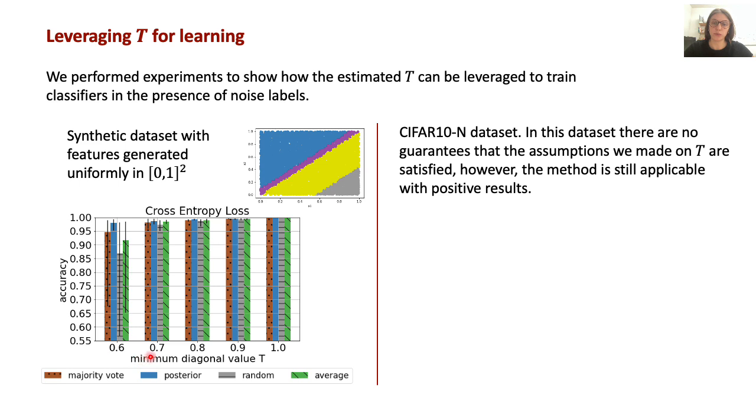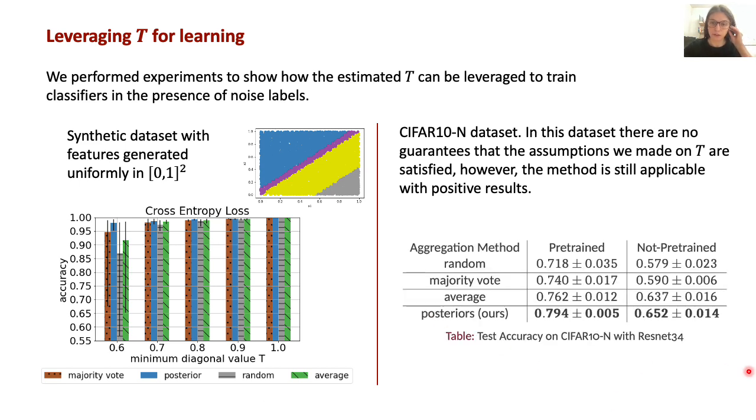Smaller value of the minimum diagonal value refers to a noisier dataset, while the minimum diagonal value is equal to one in the case of a noise-free dataset. The error bands show the maximum and minimum performance for each method. Our results show that using the posterior distribution as soft label allows for better performance than using the other three aggregation methods, and is also more robust to noise, and is the one with less variance in the results. This confirms our hypothesis that by leveraging the matrix T, better classification accuracy can be achieved. This is also confirmed by the results on CIFAR-10N. Notice that in this case, there are no guarantees that the assumptions we made on the matrix T are satisfied, being this a real dataset. However, the method is still applicable with positive results.